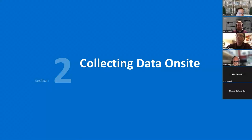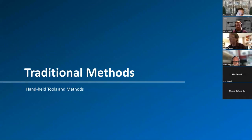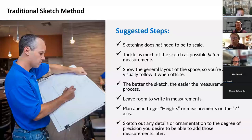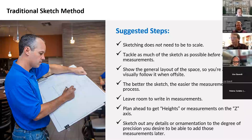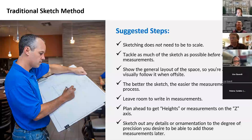We're going to start talking now about collecting the data on site and the various methods of generating it. The first one is traditional methods — basically sketching — which you're probably all familiar with, so we'll keep our time on that section fairly brief. A couple of quick notes: sketching does not need to be to scale. Just make sure you have enough room to take down the dimensions and notes, and getting all your sketching done before you start taking dimensions is a huge help on site.